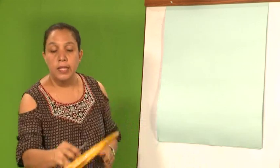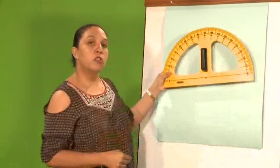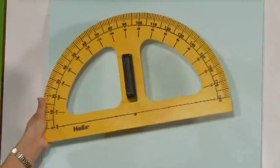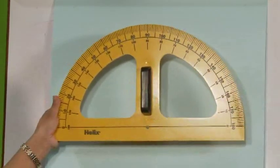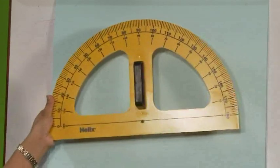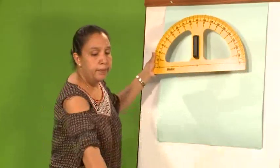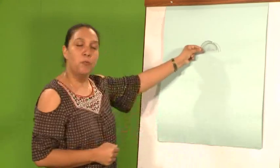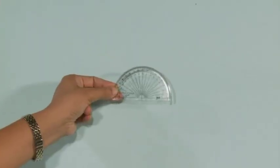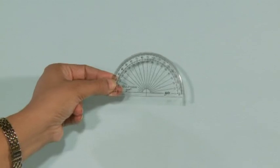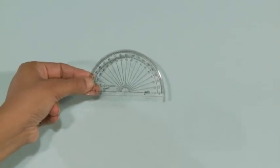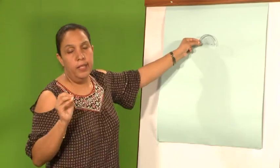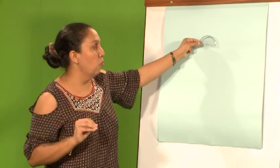Lastly, you are going to use the protractor. You've seen that already when you did angles. The protractor is used to measure angles, and these angles are in degrees.